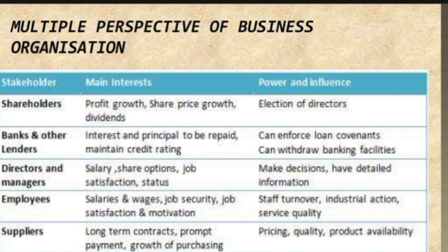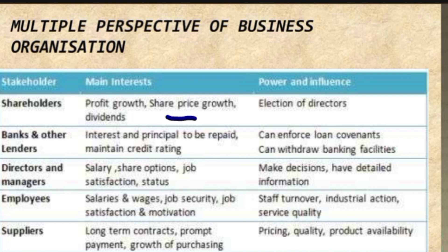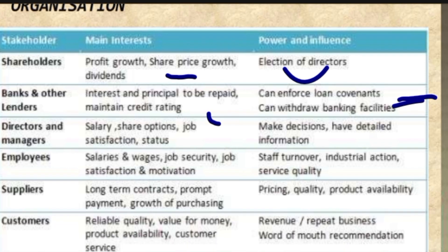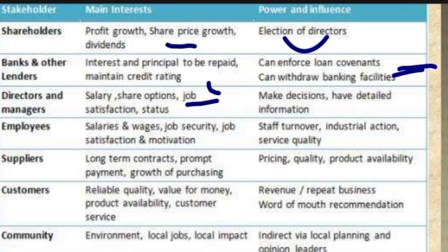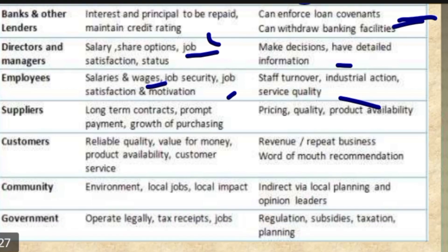Next point is multiple perspectives of business organization. The main interest of shareholders is profit growth and share price growth, and how power and influence are exercised by elected directors. For banks and other lenders, the interest is repayment of the principal amount and interest, credit rating, and ability to enforce loan covenants or withdraw banking facilities. For directors and managers: salary, share options, job satisfaction, power, and influence. For employees: wages, job security, satisfaction, and motivation — and how these affect staff turnover.